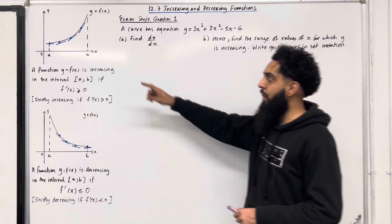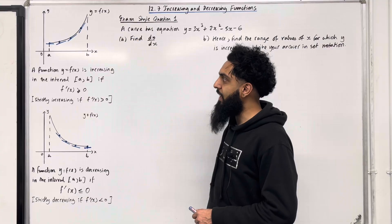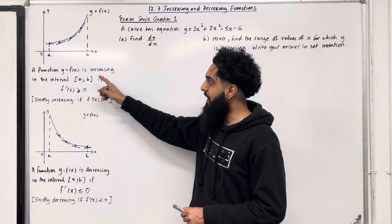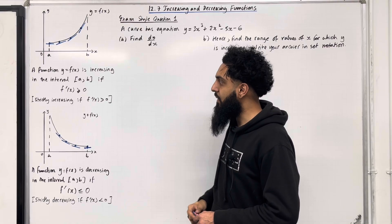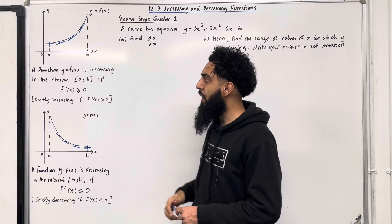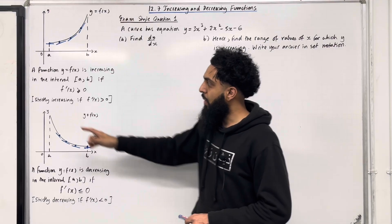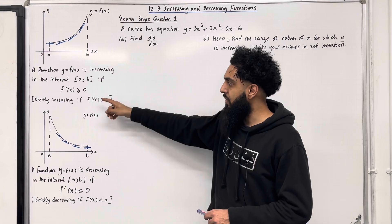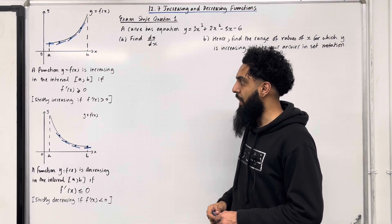Consider the following coordinate grid. I sketch the curve y = f(x) in the interval a to b. A function y = f(x) is increasing in the interval a to b if the gradient function f'(x) is greater than or equal to 0 for any x value in the interval a to b. We say it is strictly increasing if f'(x) is greater than 0 for any x value in the interval a to b.